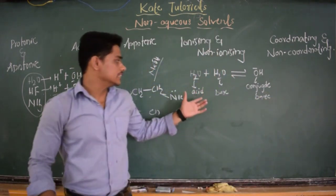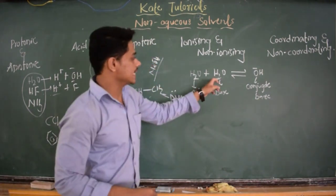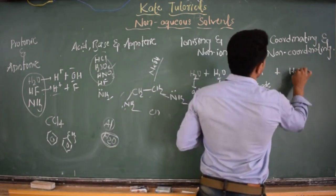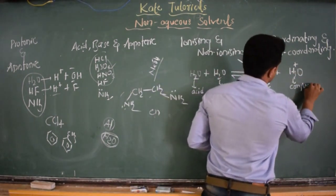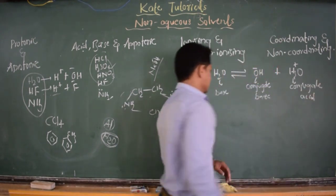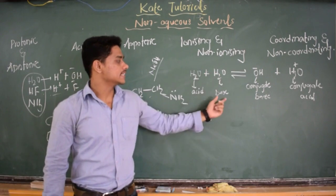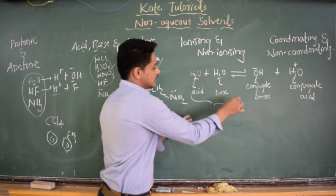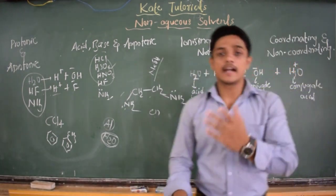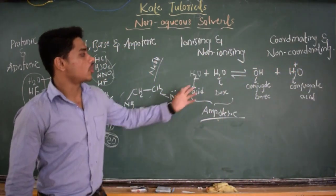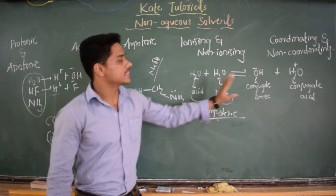So what is the conjugate base of H₂O? OH⁻ is the conjugate base of H₂O. Since the other molecule takes H⁺, it forms H₃O⁺, which acts as acid — it is the conjugate acid. Here, one H₂O gave H⁺ and acted as acid; the other H₂O took H⁺ and acted as base. So H₂O can act as acid as well as base, making it an example of an amphoteric solvent, and also an example of an ionizing solvent because there is ionization.